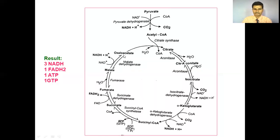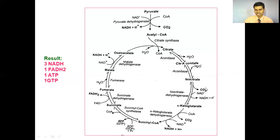Let's see the output of this Krebs cycle: three NADH are formed — one NADH, two NADH, and three NADH — one FADH2 is formed, and one ATP or GTP is formed per turn of the cycle.